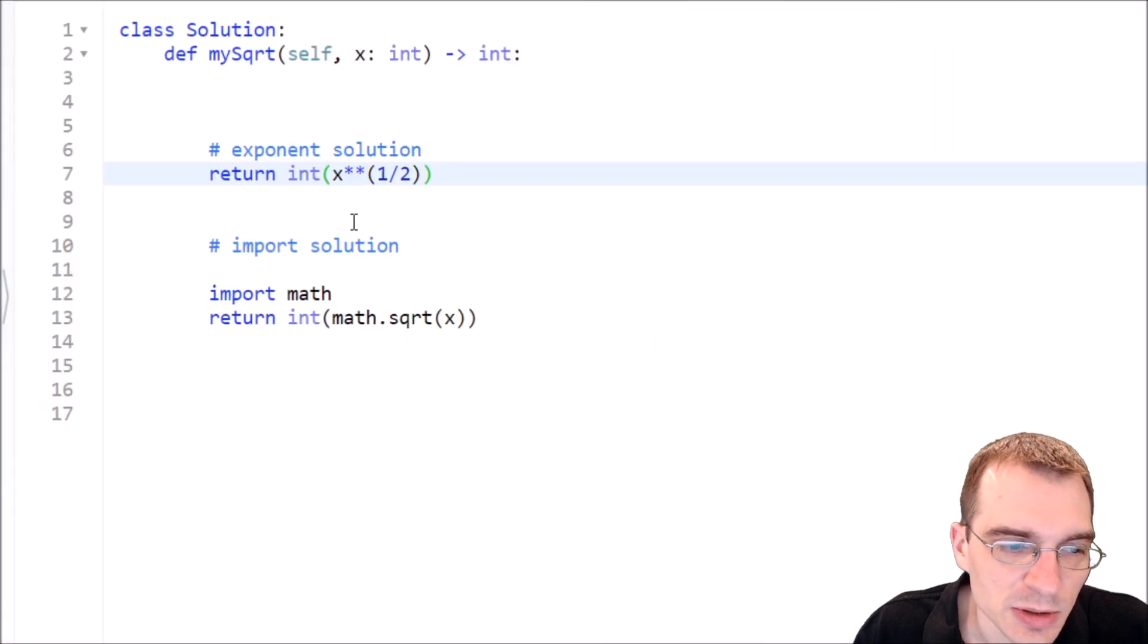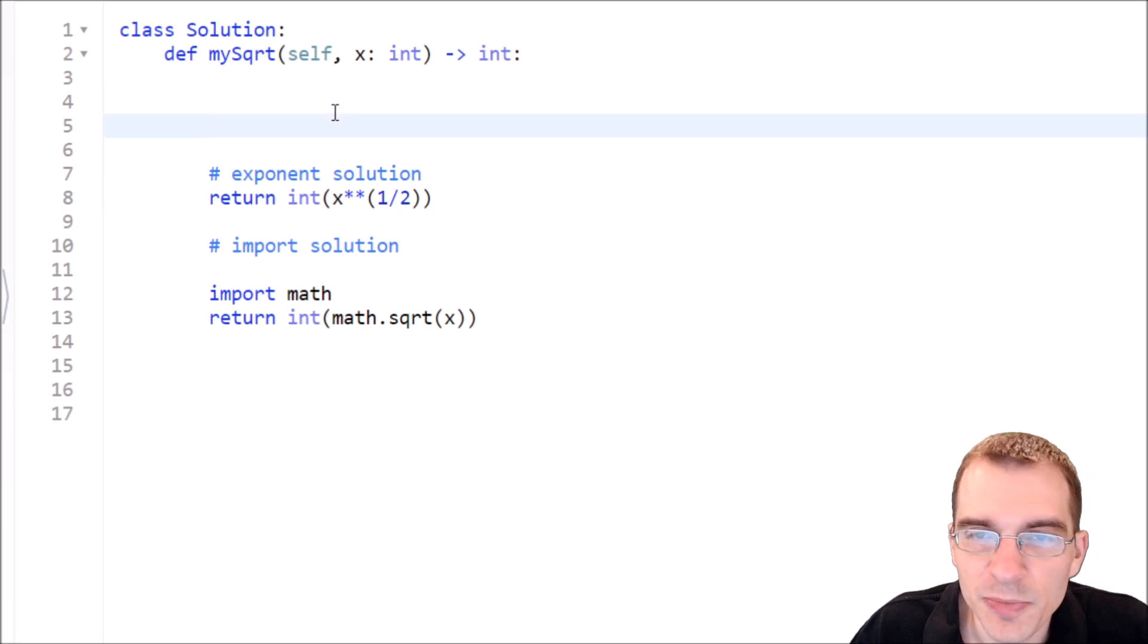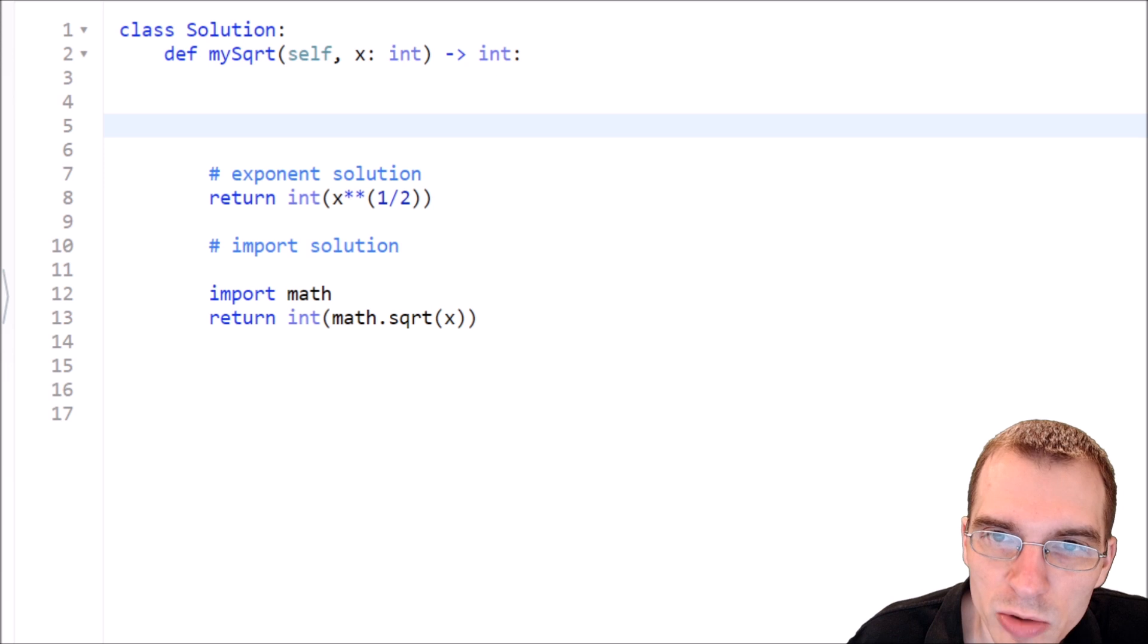Now again, these two solutions are probably the easiest and best way to do this. But clearly, if you want to make this problem more interesting than just importing something or doing basic exponentiation, you'd actually have to go out and figure out how to find square roots mathematically. And that's something that most people probably have no idea how to do. So I didn't know how to go about manually calculating square roots. I went to Wikipedia and looked up some different ways.